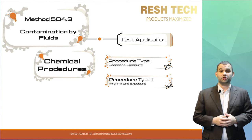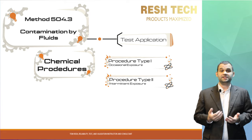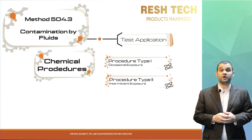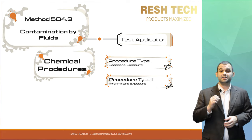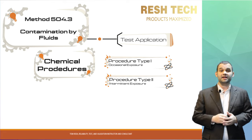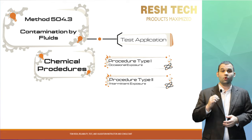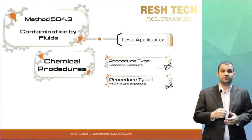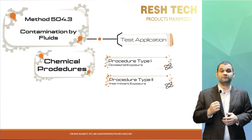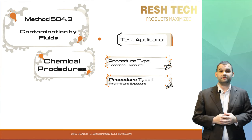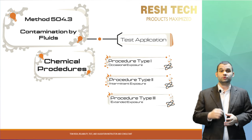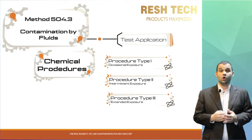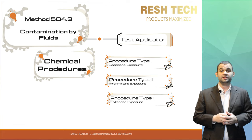Intermittent exposure is where it is expected for a system to get more frequently exposed to chemicals, such as from routine maintenance or a little jet fuel spilling over a system while fueling an aircraft. Extended contamination is where the system gets exposed to chemicals very frequently or for longer periods of time due to the operating usage conditions of the system.